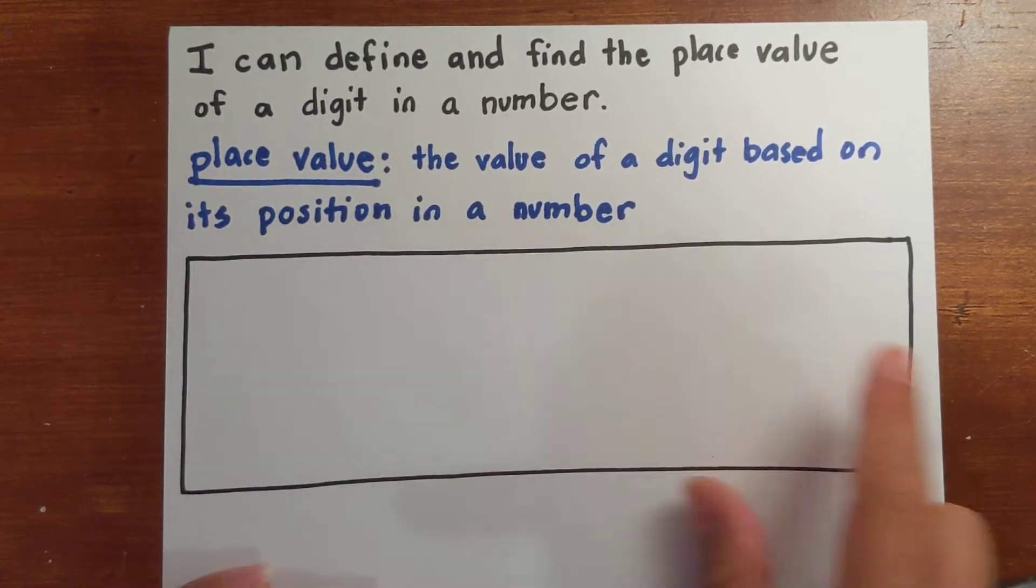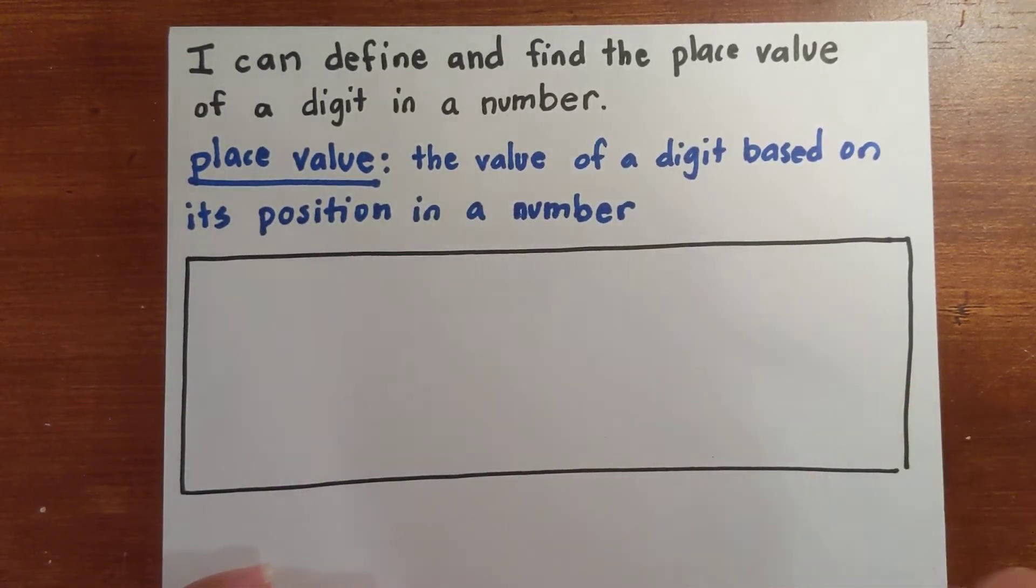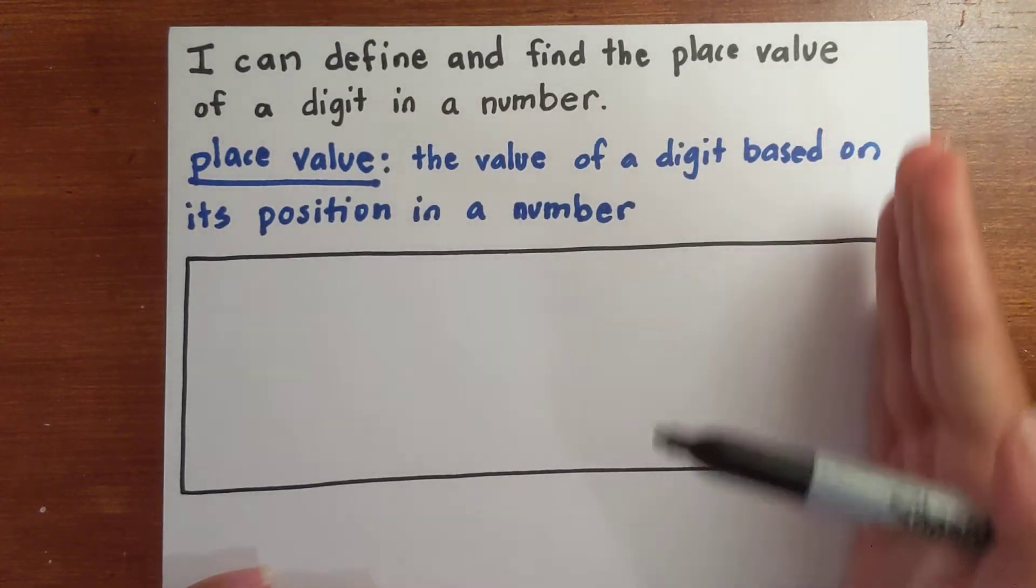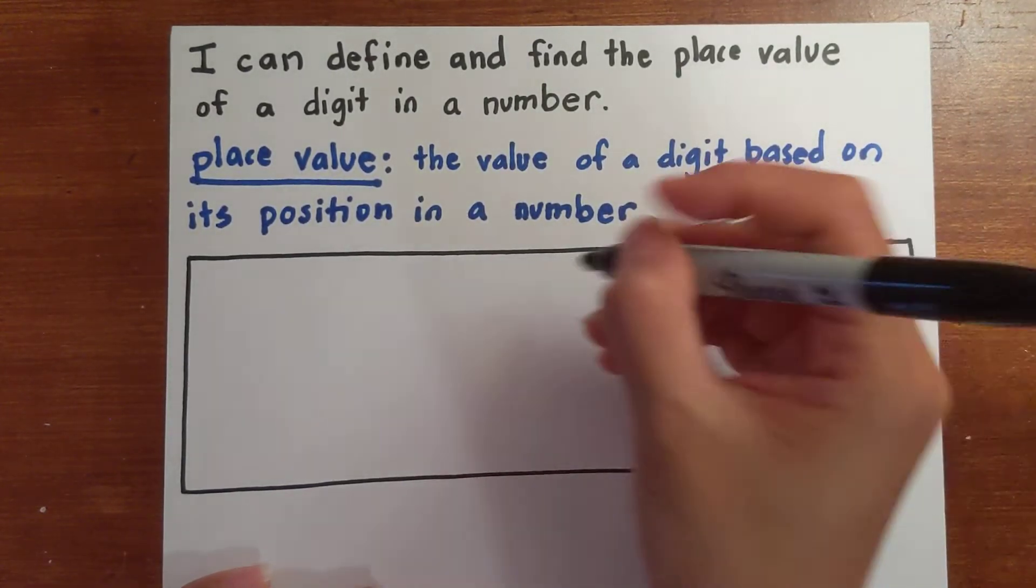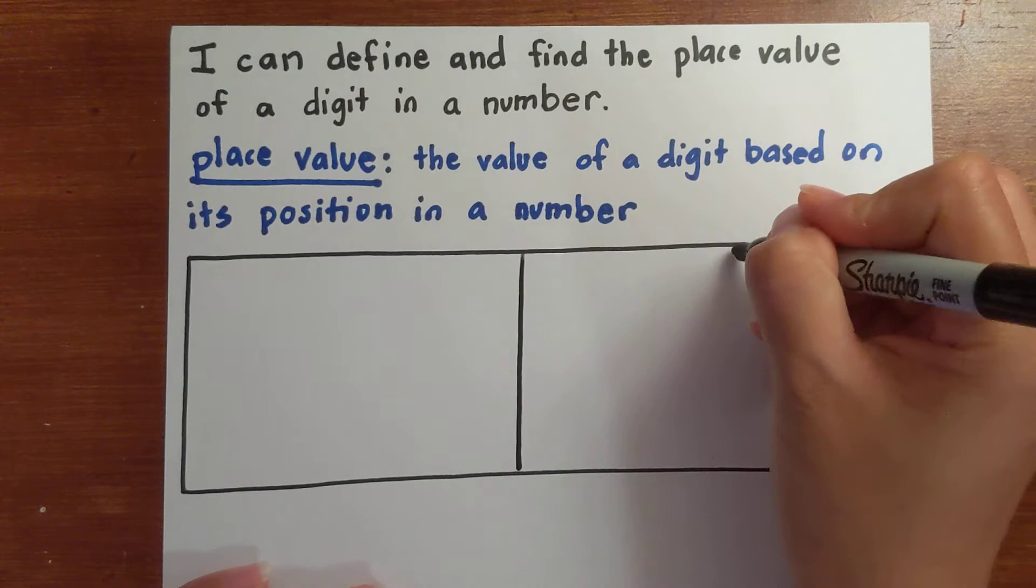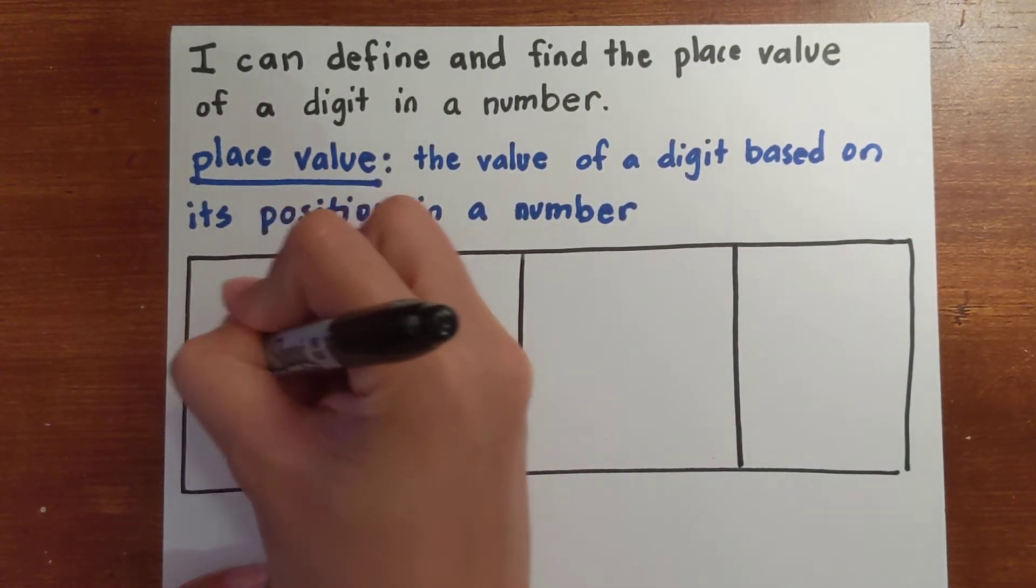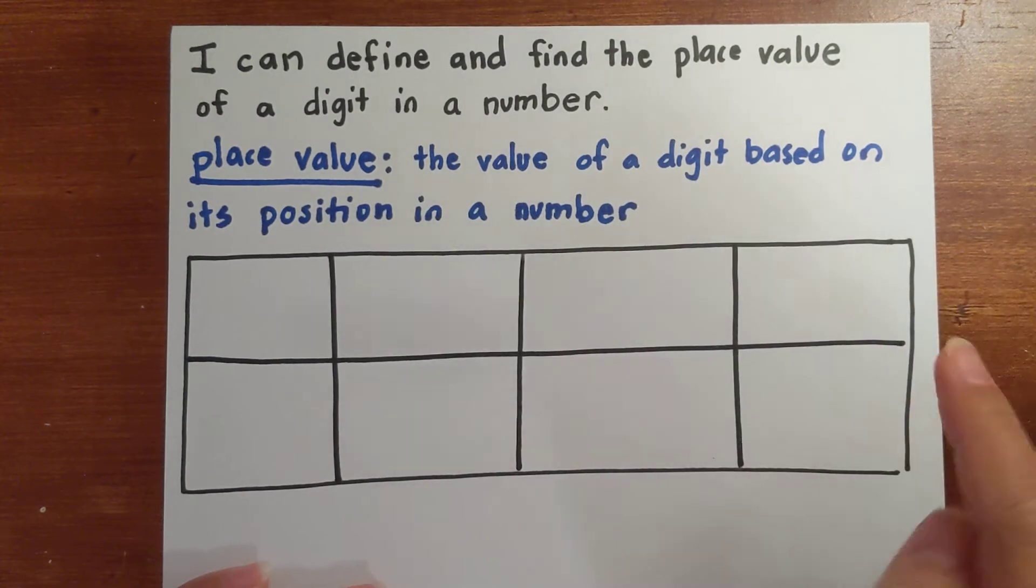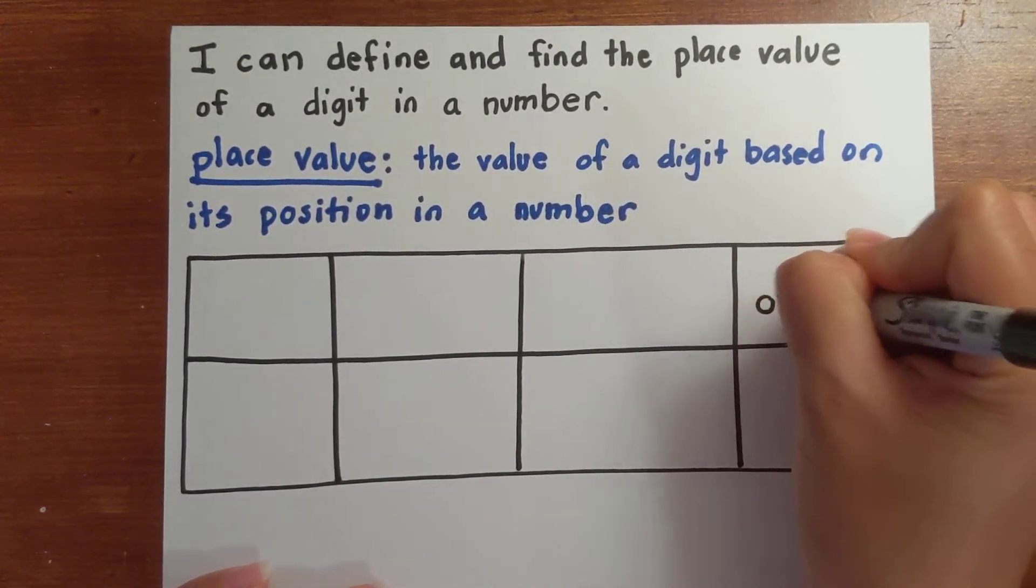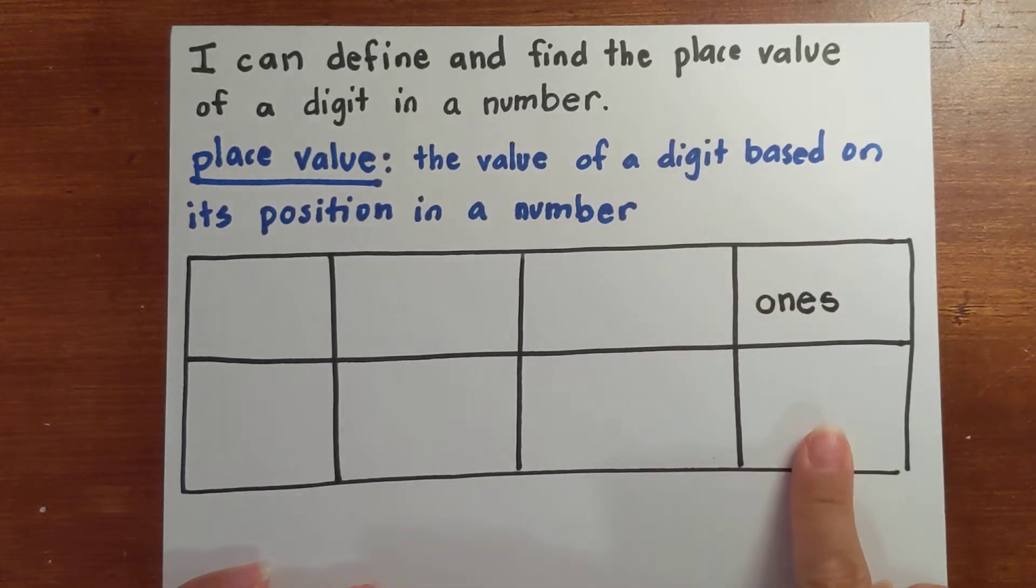So when you write down a whole number, think about money, you're going to start with your ones, right? So let's divide it up into four columns and two rows. On the right-hand side, I'm going to start with ones. So this place value is ones.